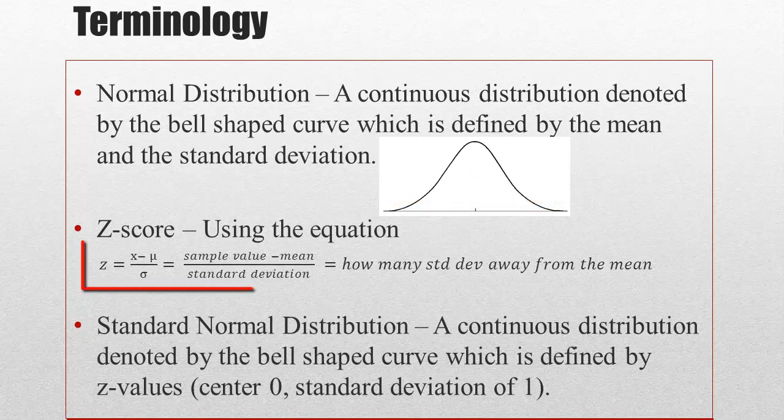You'll also notice that the z-score is also defined by the mean and the standard deviation. So the z-score is your sample value, you're going to subtract your mean, and you're going to divide by the standard deviation. And it's going to tell you how many standard deviations away something is from the mean.